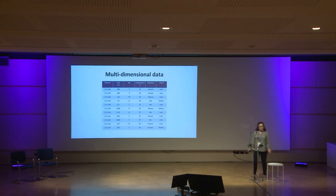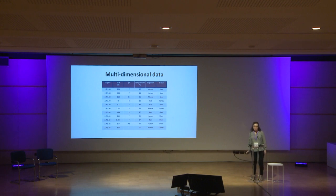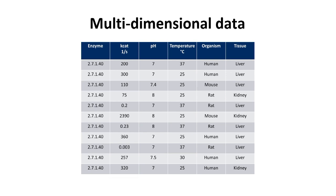In the past, we had table-like information in our database entry views. In a table you have something like this: you have an enzyme and you have different values — for example, a velocity constant Kcat — and then you have different pH and temperatures, different organisms and tissues. It's hard to get an overview about this data because you can only sort the columns but you cannot get a real overview.